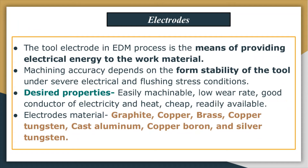Electrodes are the tool and workpiece in the EDM process. They are used for the means of providing electrical energy to the work material. Machine accuracy depends on the form and stability of the tool under electrical and flushing stress conditions. The electrode should have wear resistance — the ability of an electrode to produce and maintain detail is directly related to its resistance to wear. Minimizing corner wear requires choosing an electrode metal that combines higher strength with a higher melting point.